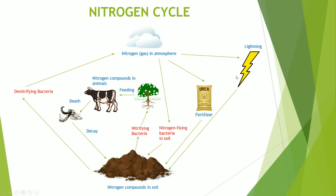So what happens for nitrogen gas to become nitrogen compounds? We have lightning — there's a huge amount of energy, so nitrogen ends up reacting with oxygen in the air to form nitrogen oxides. Nitrogen oxide is a type of nitrogen compound that plants can directly absorb and use. We also have fertilizers that humans make to put into the soil, and fertilizers contain nitrogen compounds to allow plants to absorb and use as well.